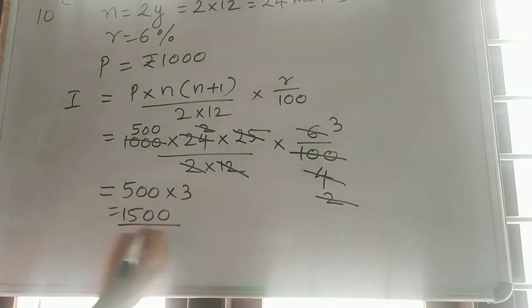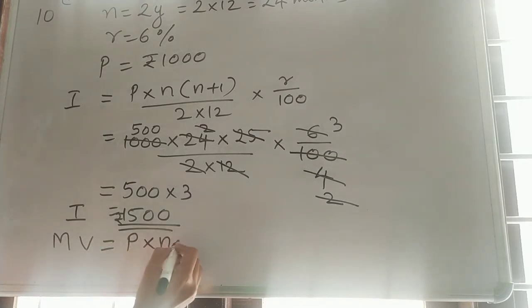So, that is I. 1500 is I. I we got. Next, we want to find the maturity value. So, maturity value is equal to P into N plus I.